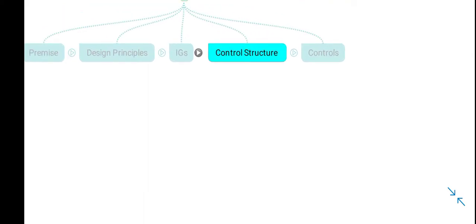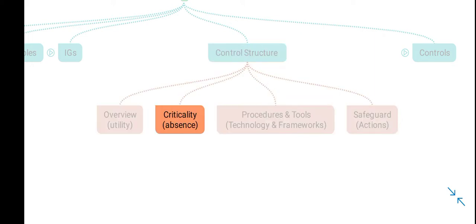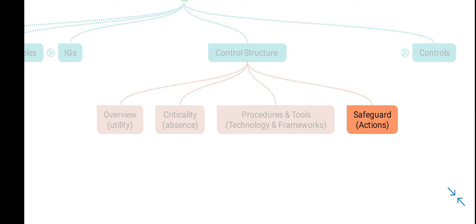The control structure of each of the 18 controls is the same. First, there is an overview of the utility of the control and the criticality — why this control is important and what its absence would cause, or what would be the impact of its absence in an organization. Then there are certain techniques, tools, technologies, and related security frameworks. The meat of this document is the safeguards or actionable items in each of the 18 controls. In total there are 153 safeguards, divided across each of these 18 main controls.